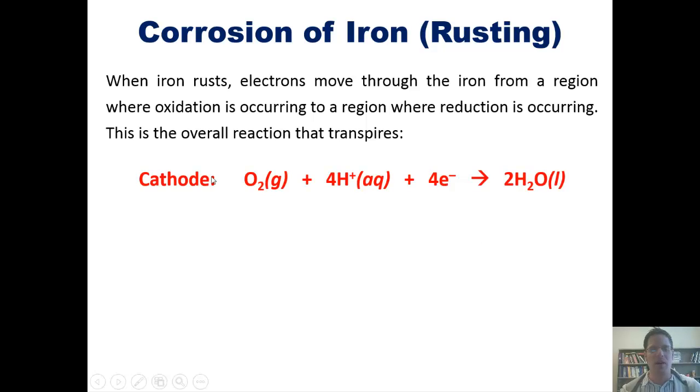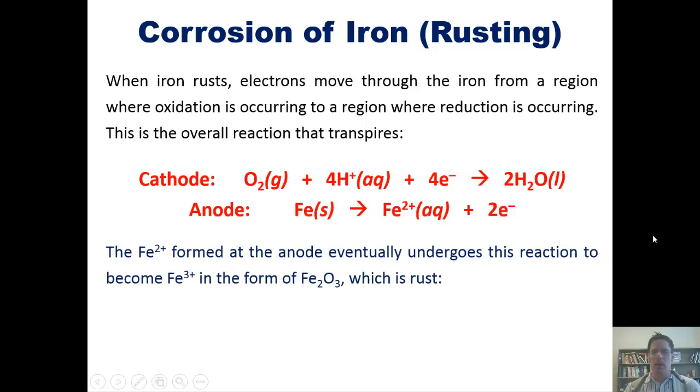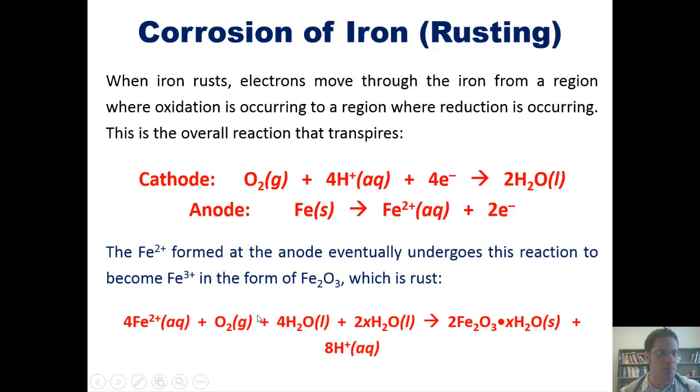At the cathode, we have oxygen, which has an oxidation number of 0, being reduced to oxygen 2- in water. At the anode, we have iron, which is iron 0, losing electrons or being oxidized to form iron 2+. The iron 2+, formed at the anode, eventually undergoes this reaction to become iron 3+, in the form of iron oxide right here, which is rust. As we see in this equation, a bunch of iron 2+, a bunch of O2, and a bunch of water combining in some magical way to eventually form iron 3 oxide right here, complexed with water.